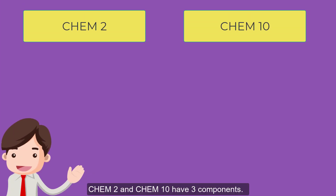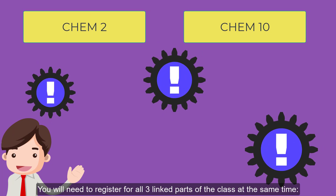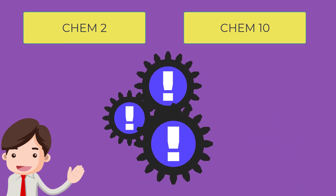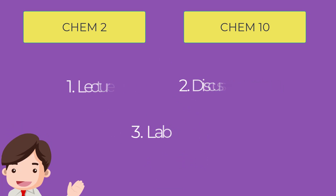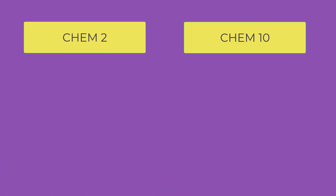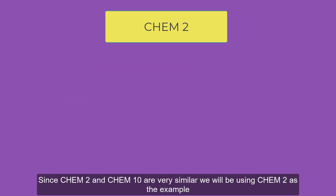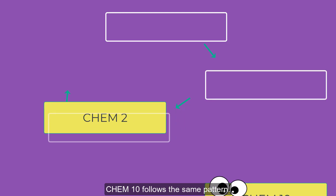Chem 2 and Chem 10 have three components, and you will need to register for all three linked parts of the class at the same time. These components are lecture, discussion, and lab. Since Chem 2 and Chem 10 are very similar, we will be using Chem 2 as an example. Chem 10 follows the same pattern.